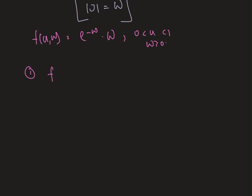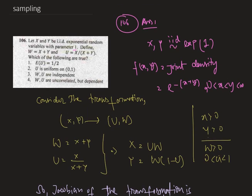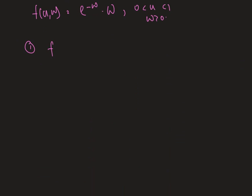So first of all, we evaluate the marginal density of u. And how can we get this? We just integrate f of u w in the range of w with respect to w. Now w is strictly positive, so the range is 0 to infinity. Now here we get w to the power 2 minus 1 e to the power minus w dw. Therefore, this is nothing but a gamma distribution. So it is gamma 2, and that means it is 1, and the range of u is 0 to 1.